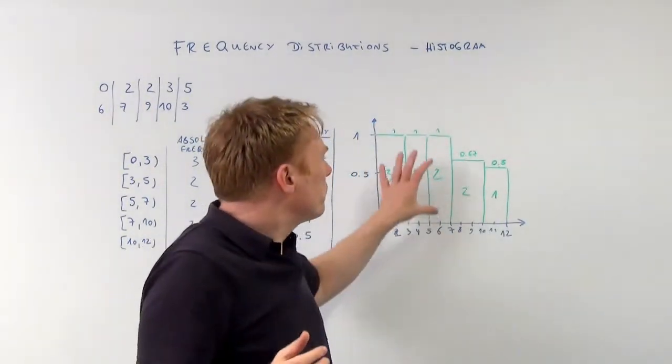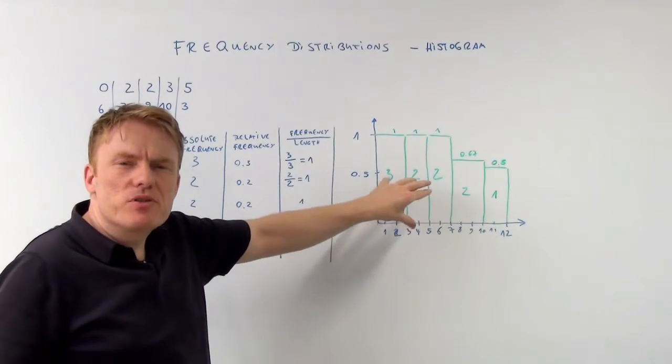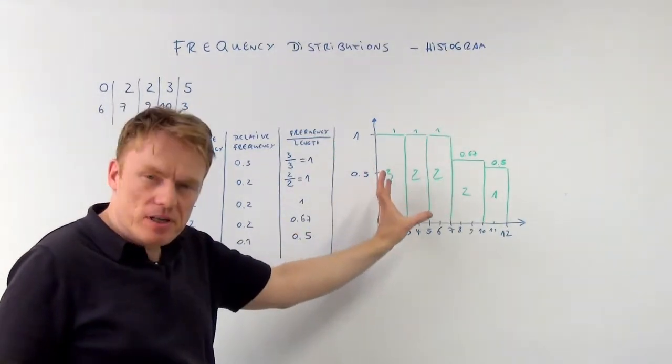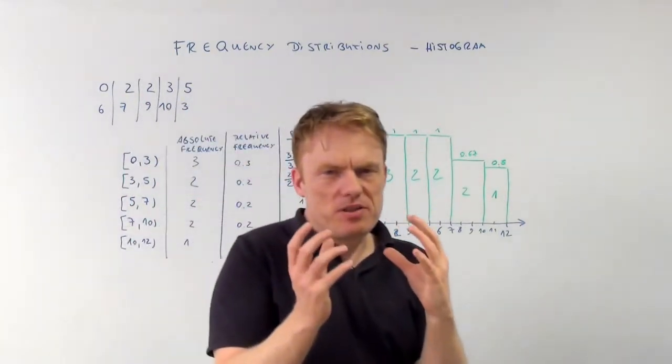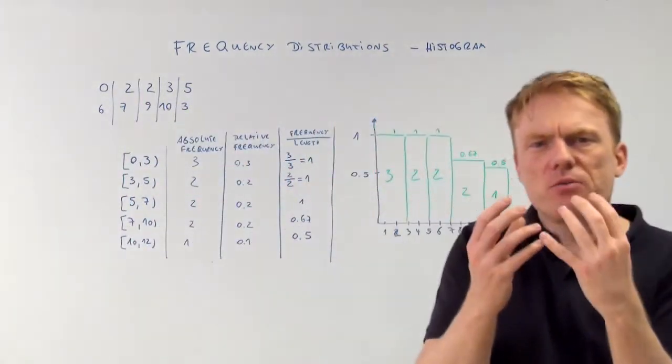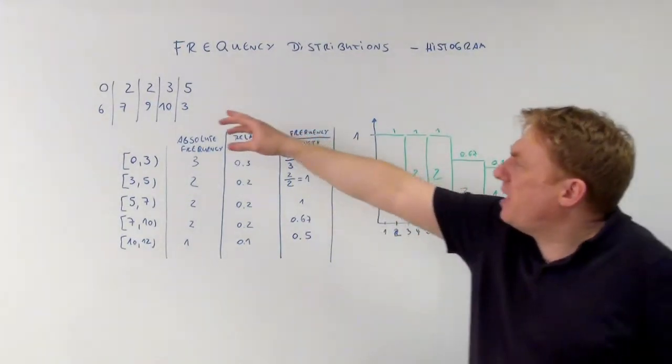And the histogram itself shows us that many numbers are on the left side, to put it this way, which is visible in this histogram. A histogram is a visualization of those data.